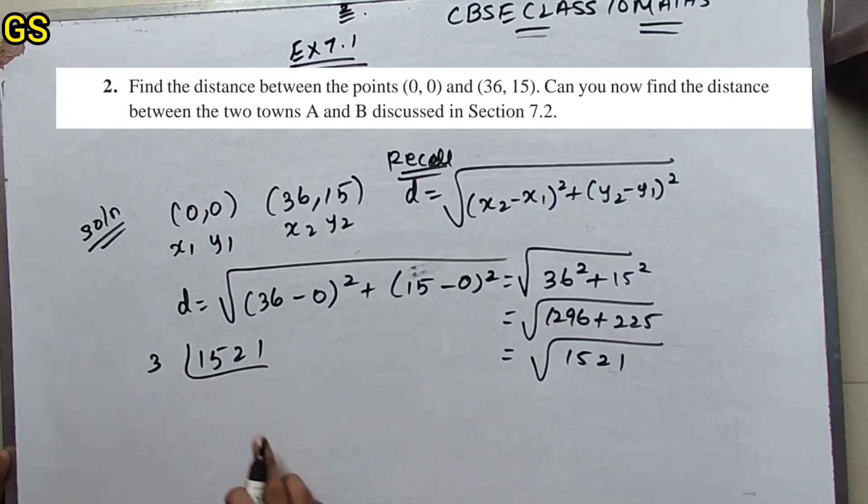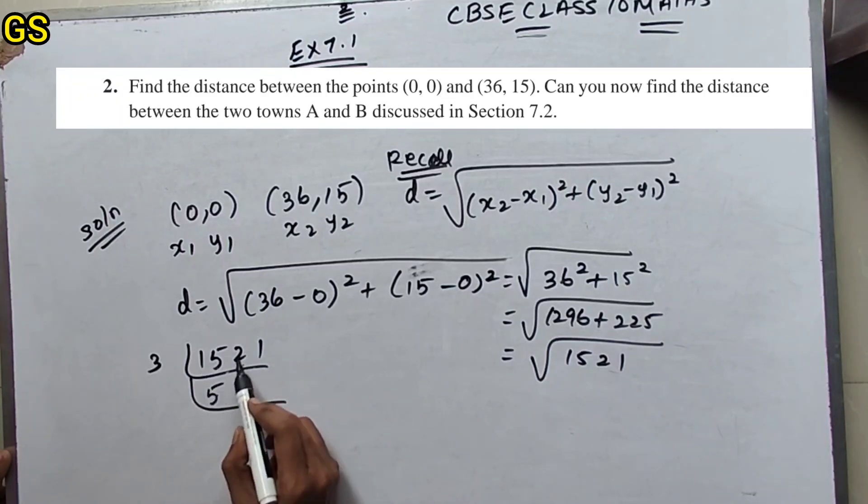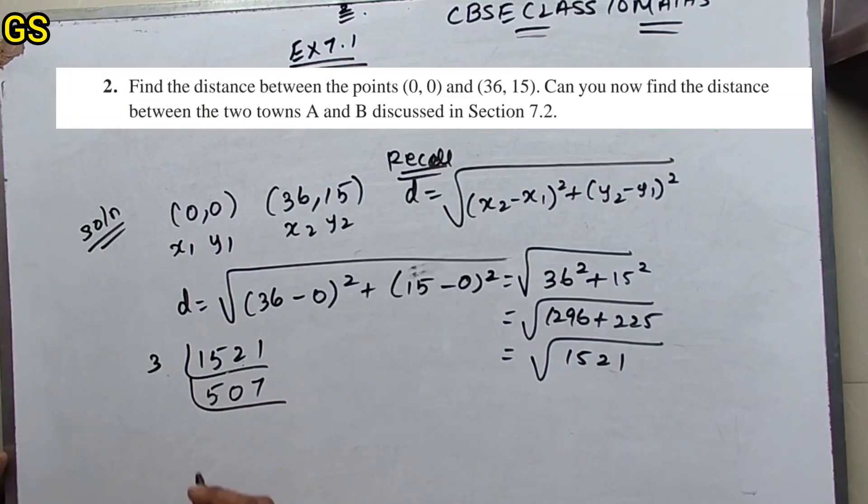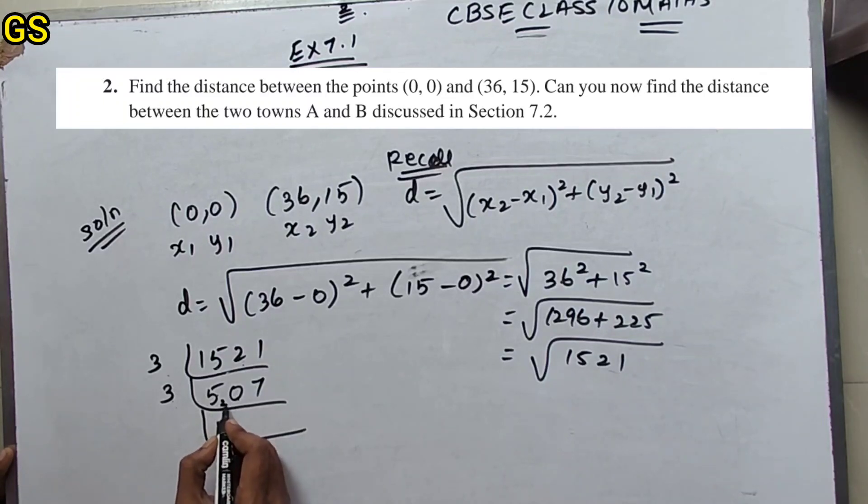3 table, 5 times 15. Next, 21, 3 table... factorizing 1521. Balance 21, then 27, 9 times.